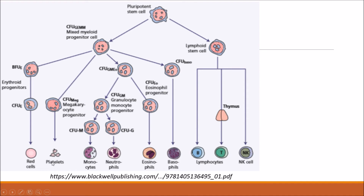This diagram from the linked article shows all the different ways haemopoiesis can occur — it's a really good resource I highly recommend. Here we have the pluripotent stem cell derived from the mesenchyme. From here it can differentiate to two points: a lymphoid stem cell or a colony forming unit GEMM. From there it can differentiate into all different sorts of cells. All these different cells can be derived from this ancestral pluripotent stem cell.